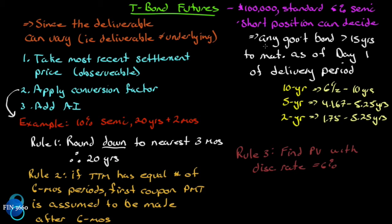The short position can decide what to deliver — they can deliver any government bond greater than 15 years to maturity. So they could deliver one that's 17, 19, 22, or 25 years, so there's variability in the time to maturity. The underlying will be the standard six percent semi, but the deliverable is probably not the same as the underlying — that would just be by luck and circumstance rather than by design.